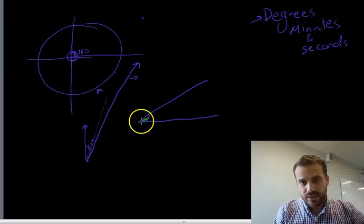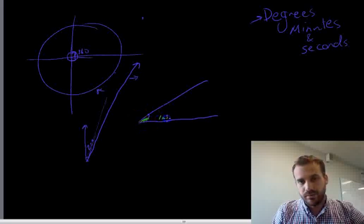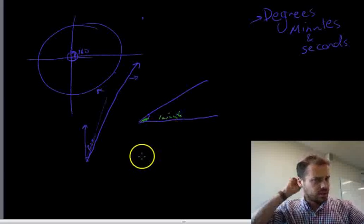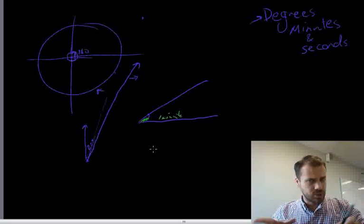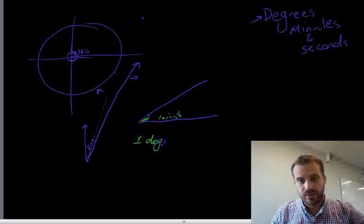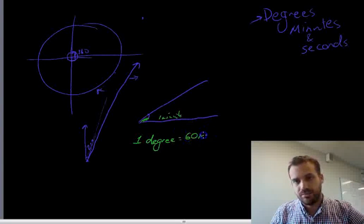And we're going to call each of those 60 smaller things a minute. One minute. 60 minutes, like in an hour. So, to put this another way, 1 degree is equal to 60 minutes.